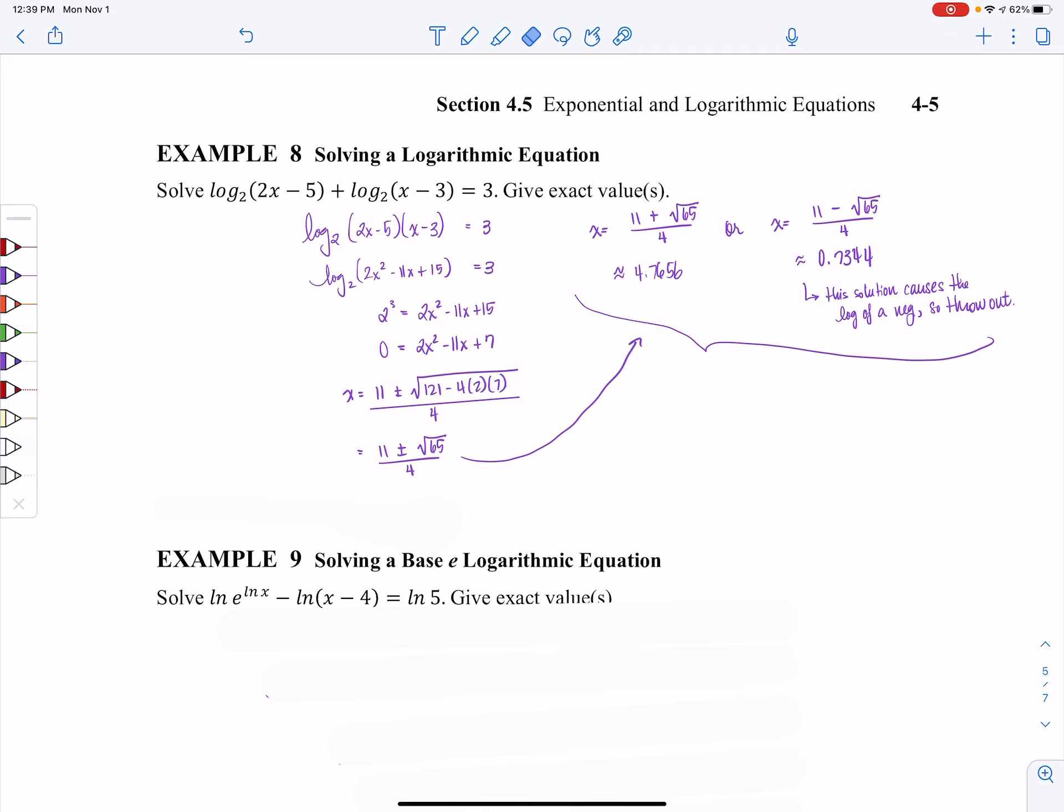And when I plug these into the original, two times four something, that's eight something minus five. So this one's log of a positive, no problem. And here, log of four something minus three. That's the log of a positive, no problem. We have that this solution is a good solution.